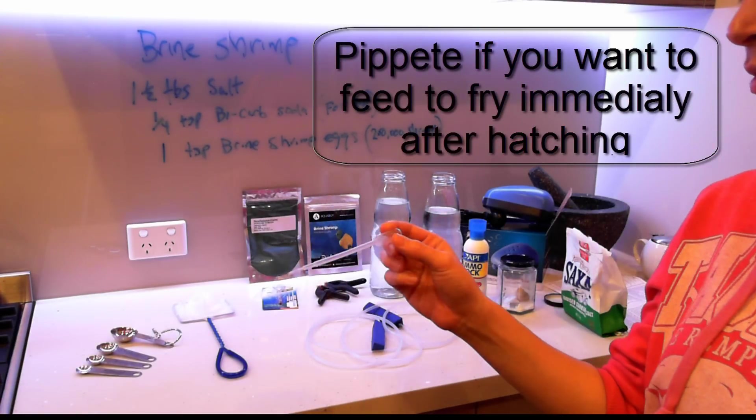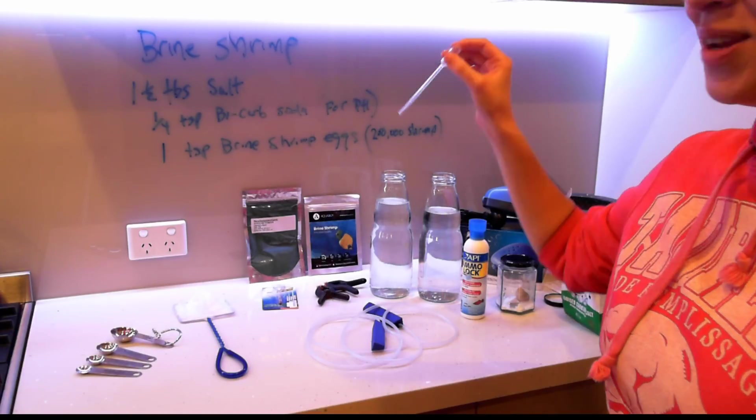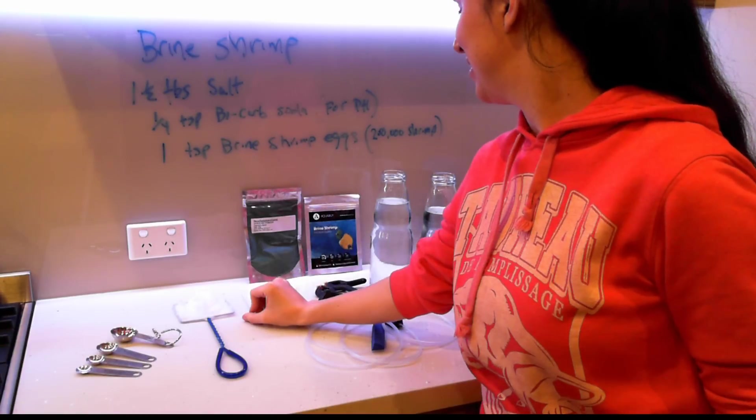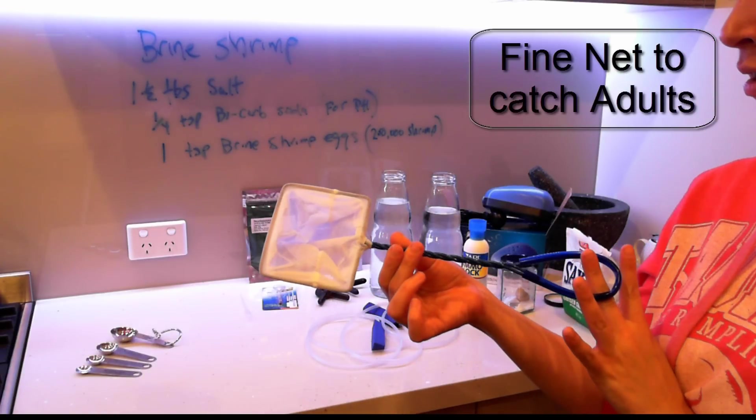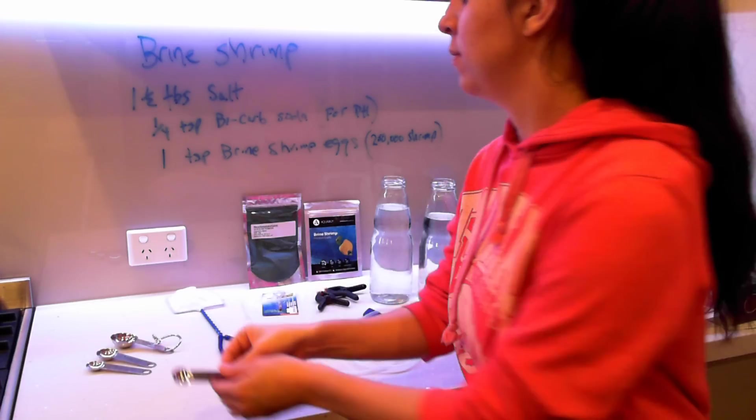We have our pipette here, and that just helps you to harvest the hatchlings to feed to your fry if you want to do that straight away. We'll also need a net. I'm going to be using this in part two. I'll get more in-depth there. That's just to harvest your adult shrimp.